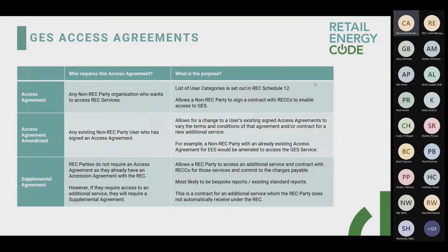The supplemental agreement is for REC parties who don't require an access agreement as they already have an accession agreement in place with the REC, but require access to an additional service. This agreement allows the REC party to access the additional service and contract with RECO for those specific services, committing to the charges payable. It most likely relates to bespoke or standard reports. Note also that if a gas shipper shares the same registration number as a REC party, that shipper would be considered part of the REC party and the accession agreement would cover them.